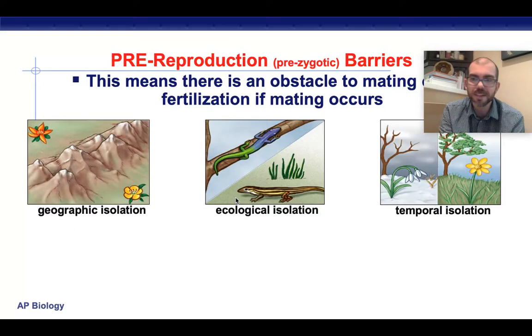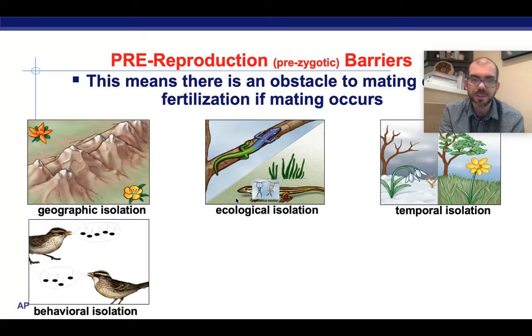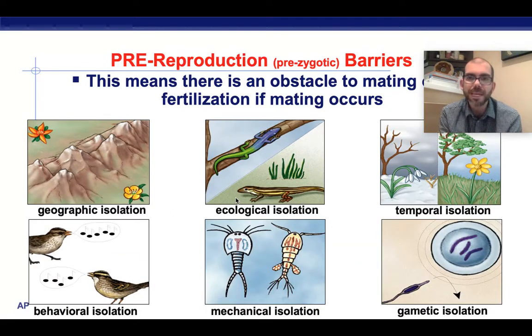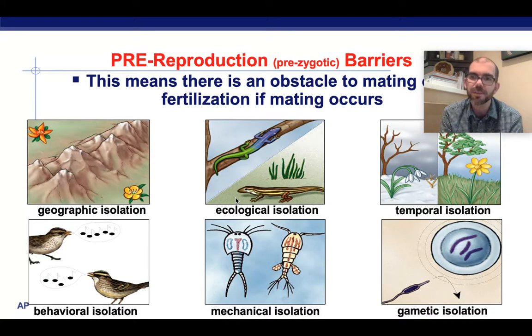The prezygotic barriers are: geographic isolation, ecological, temporal, behavioral, mechanical, and gametic. These are all barriers that prevent reproduction before a zygote can form.